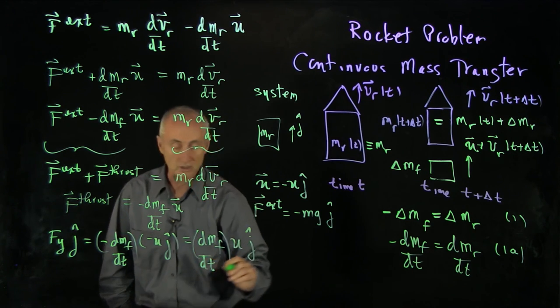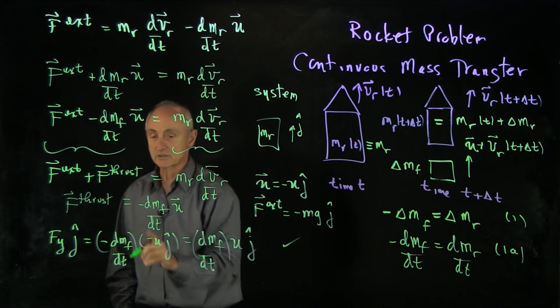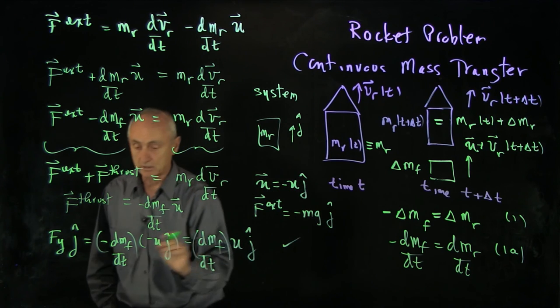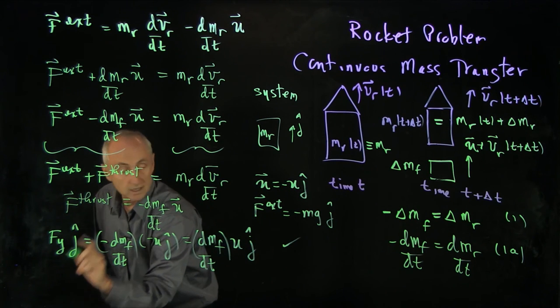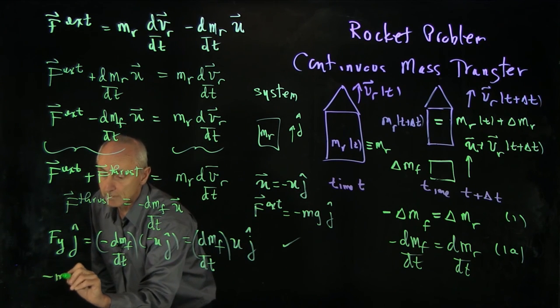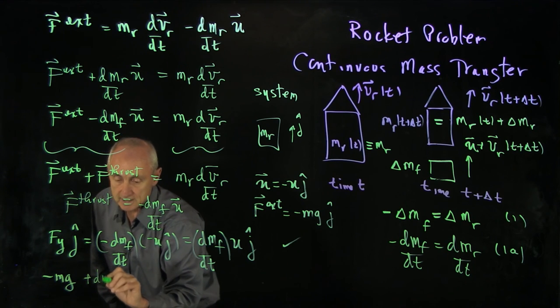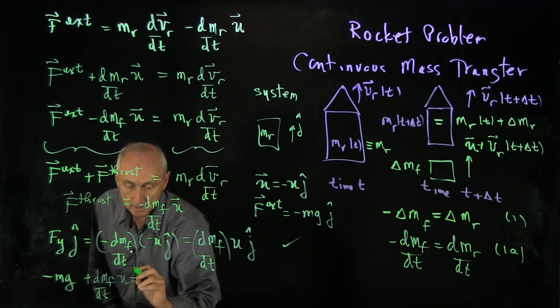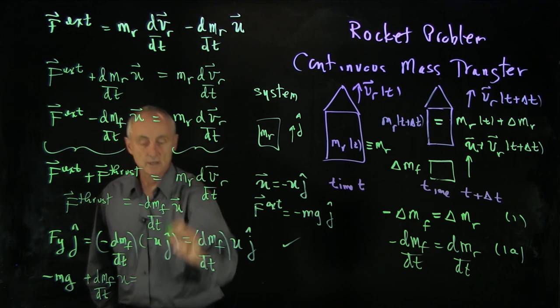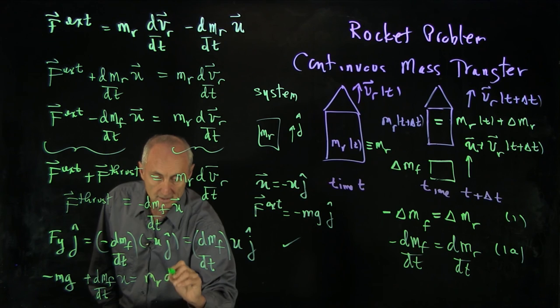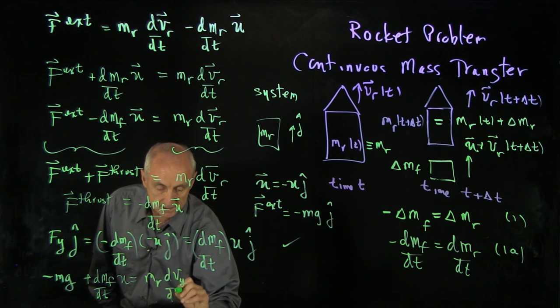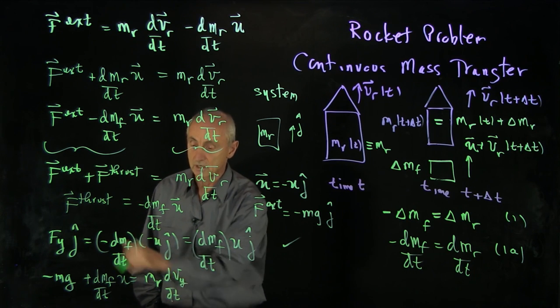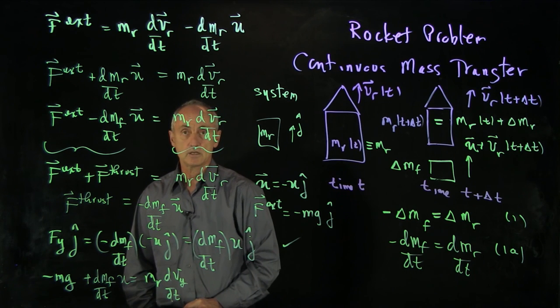And in our unit vectors here, we have minus mg plus dm fuel dt times u is equal to mr dv y dt of the rocket. And so this is the rocket equation in components.